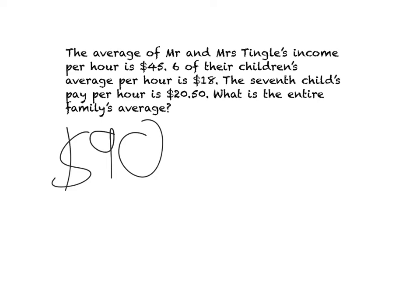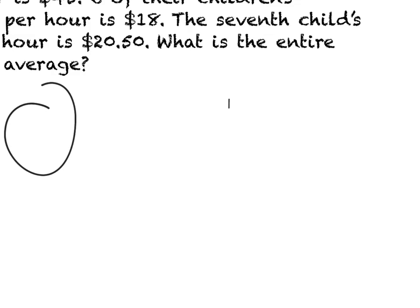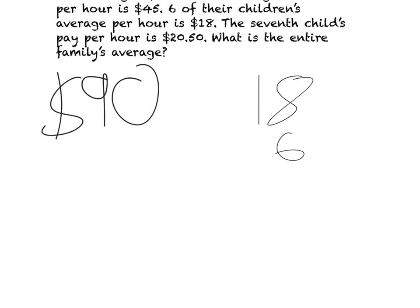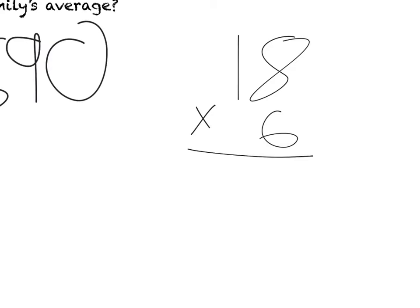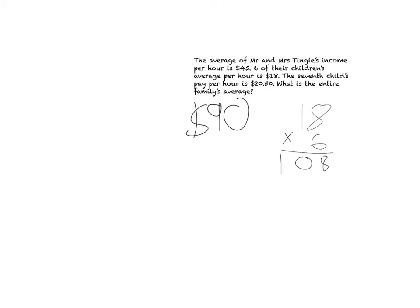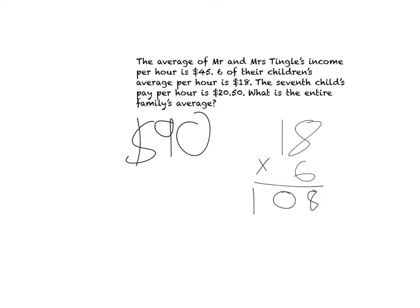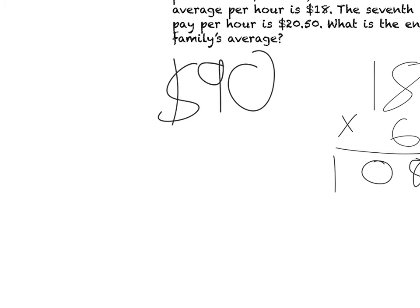And then I want to find out the six children's income per hour altogether. So I'm going to do 18 times six equals 108. So I've got 108 plus 90 to find the total so I can eventually get to the average of the entire family. So 108 plus 90 would be 198.